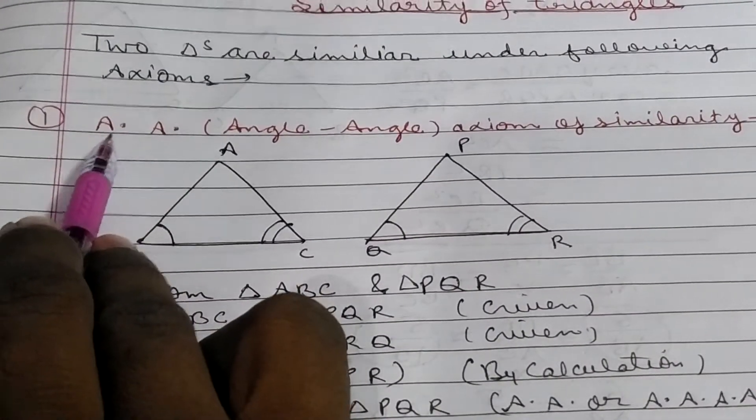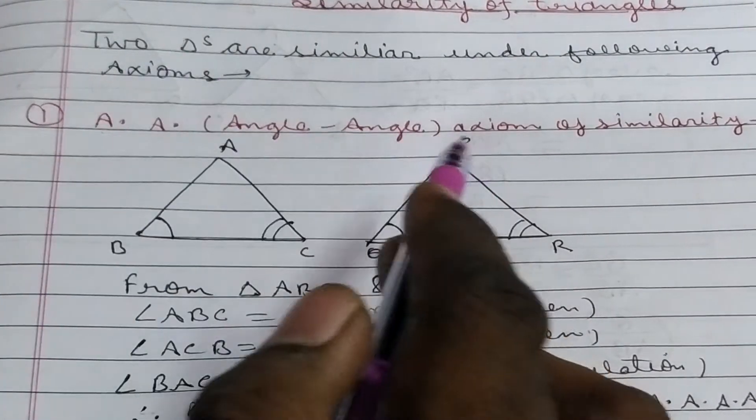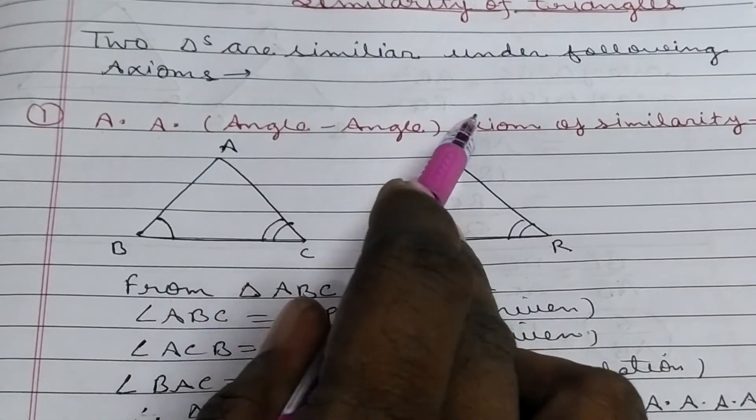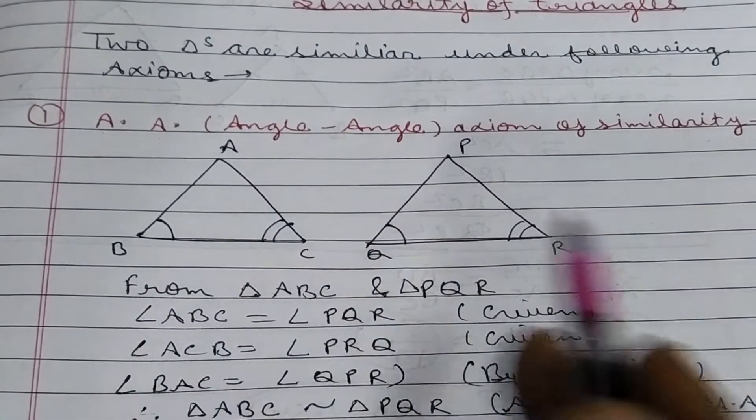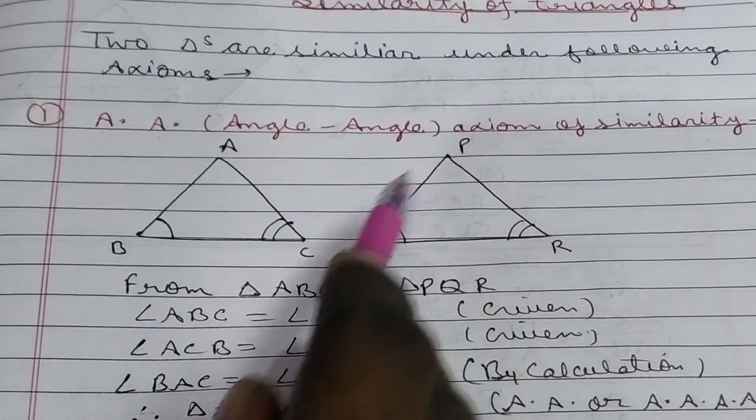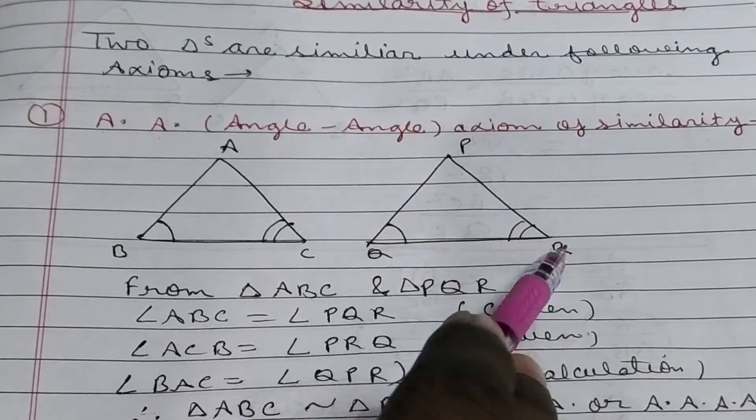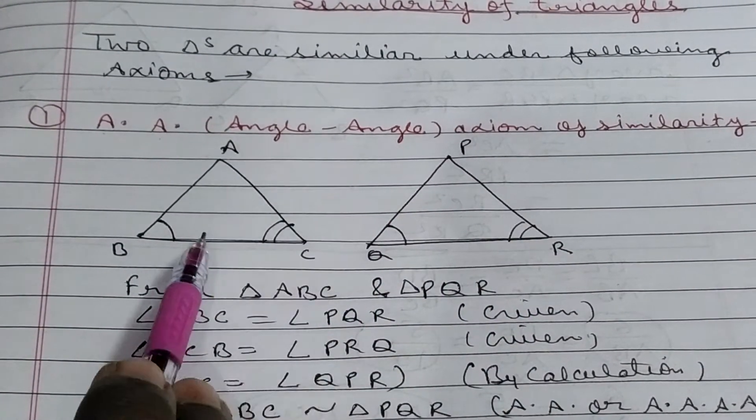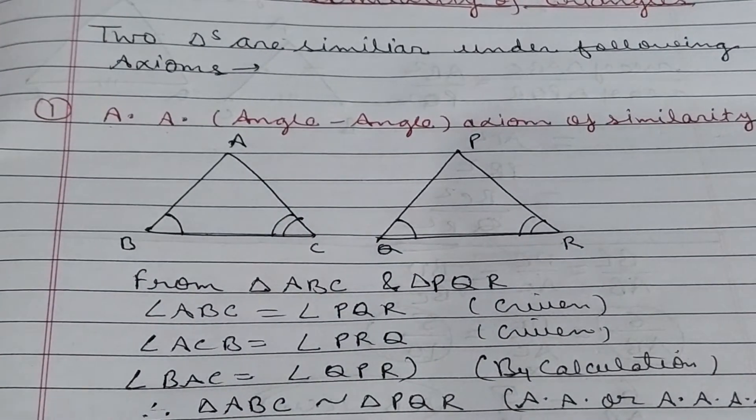The first axiom is AA axiom. Or you can say AA axiom, which means angle, angle, axiom of similarity. So, there are two triangles. And it is given that angle ABC and angle PQR are equal, while angle ACB and PRQ are equal. Then in that case, you can say that these two triangles are similar.